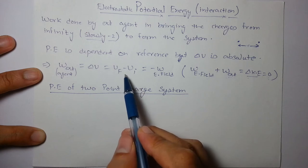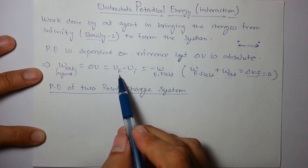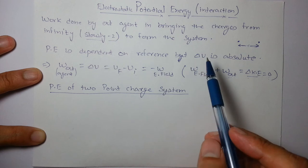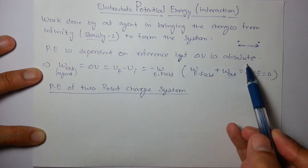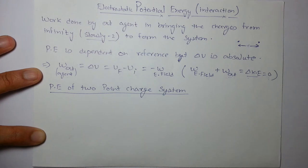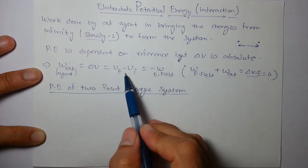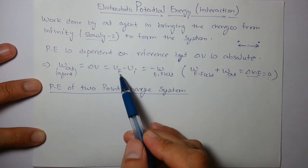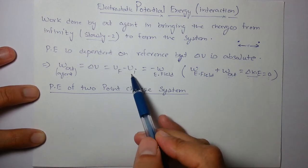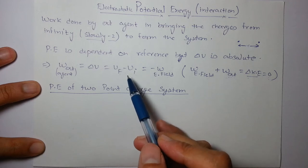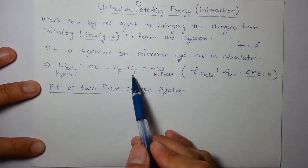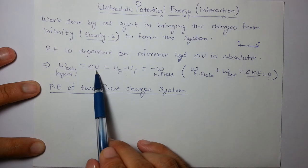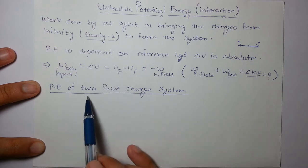Change in potential energy is final minus initial. Potential energy is dependent on reference, but change in potential energy is absolute — this is a very important statement. By this definition we can only provide the change; to get the potential energy of any state you have to assume or be given that the potential energy of another state is known. So a reference is required to find the potential energy of any state; otherwise we can only calculate the change.